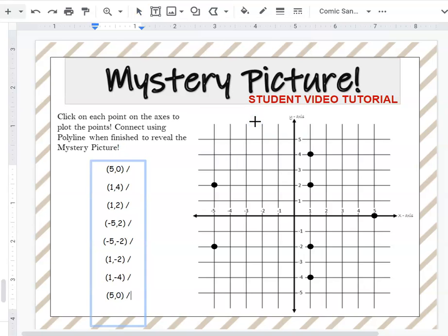Once you click on it, we're going to start with our first pair, which was five, zero. Click on that and then connect it to the next one, which in this example is one, four. Go ahead and connect them to each point in the order that they are in.